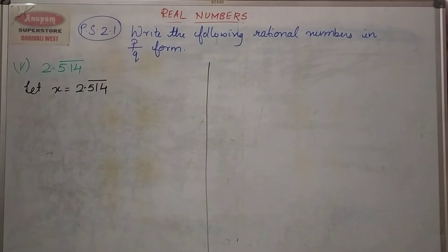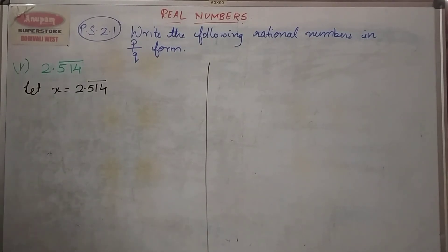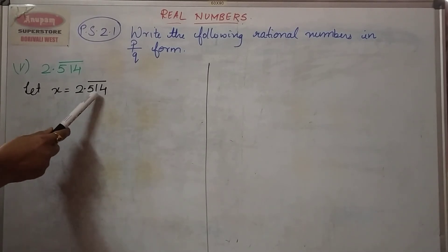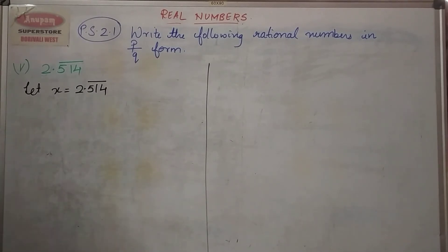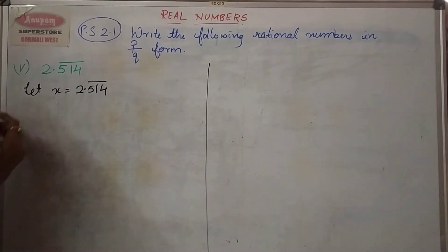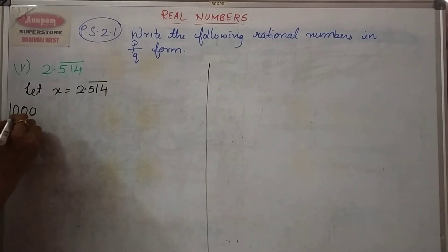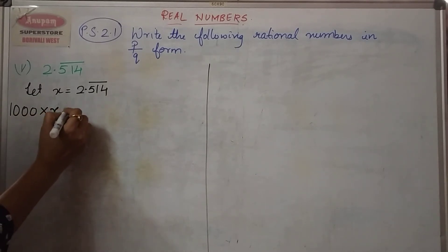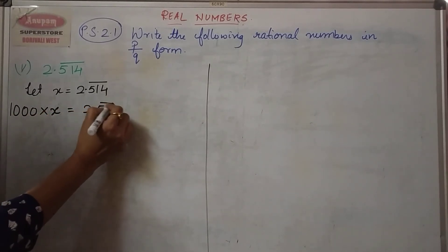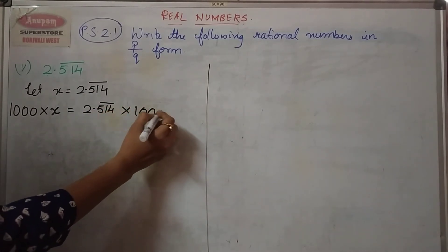Let us look at the next example. Let x is equal to 2.514 bar. Since I have 3 digits after the decimal point, I am going to multiply by 1000, as it has 3 zeros in it. So 1000 into x is equal to 2.514 bar into 1000.